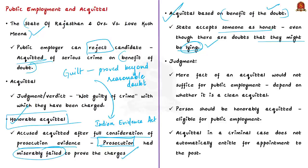In this case, led by Justice Sanjay Kishan Kaul, the Supreme Court confirmed that acquittal on benefit of doubt is quite different from an honorable acquittal. The court observed that the mere fact of acquittal would not suffice for public employment; it would depend on whether it is a clean acquittal based on total absence of evidence. A person must be honorably acquitted of a serious crime to be considered eligible for public employment. The court also observed that acquittal does not automatically entitle a candidate for appointment to a post.